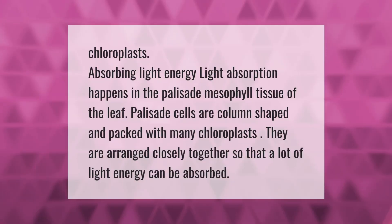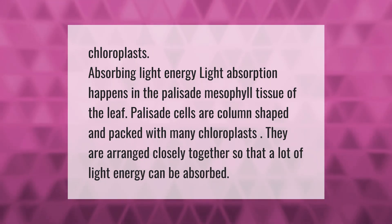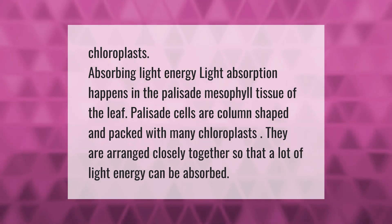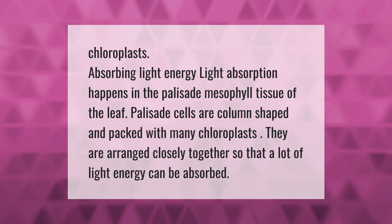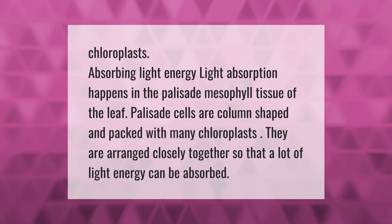Light absorption happens in the palisade mesophyll tissue of the leaf. Palisade cells are column-shaped and packed with many chloroplasts. They are arranged closely together so that a lot of light energy can be absorbed.